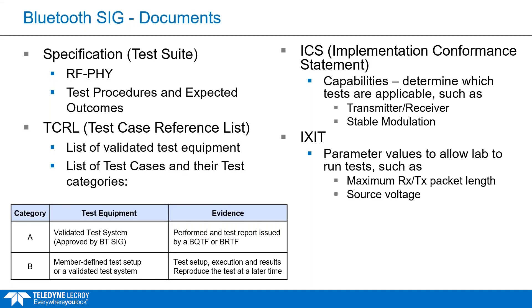The second document is the TCRL, or test case reference list. This is a spreadsheet listing the test equipment that can be used to officially validate a product, as well as a list of test cases per category. Tests are split into two categories: category A, which must use validated test equipment and be performed by a certified lab, and category B, where the test equipment can be defined by the manufacturer and evidence must be held so tests can be repeated at a later time.